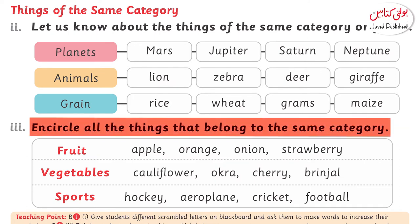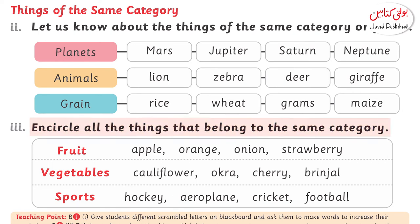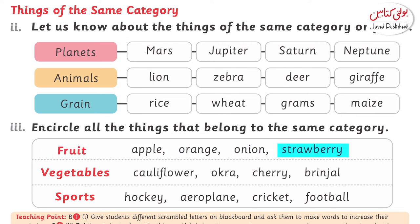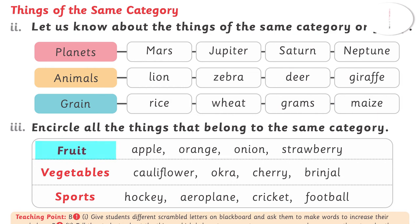Which words fall in the category of fruits? In the category of fruits, we have options like apple, orange, onion, and strawberry. So which ones are fruit? Apple, orange, and strawberry are fruits. Onion does not fall in this category because onion is a vegetable.